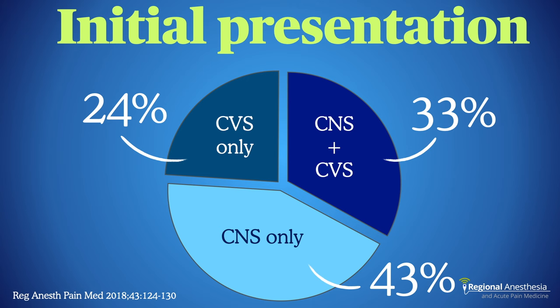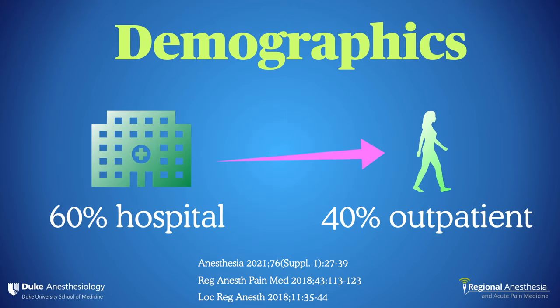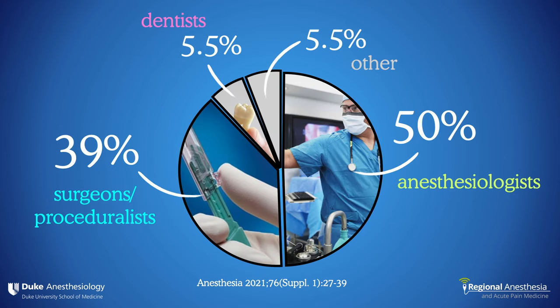This speaks to the need to remain vigilant about preventing LAST. Another thing that has changed is where it happens. While the majority still occur in hospital, about 40% happen in ASCs, outpatient urology clinics, cosmetic surgery clinics, dental offices, and so on. In the last 10 years, we've seen an uptick in the proportion of LAST due to surgeons and other proceduralists, at least partly related to tumescent anesthesia for liposuction.